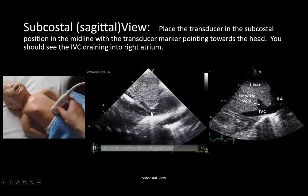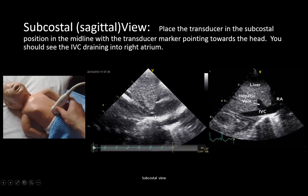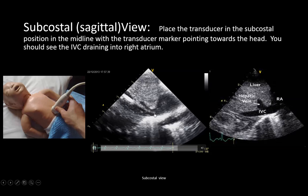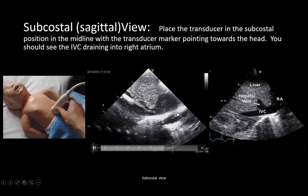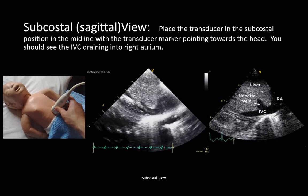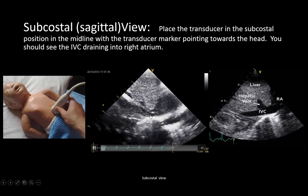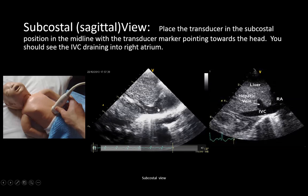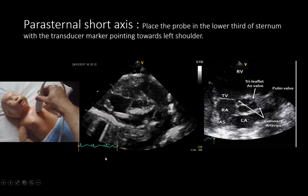Once we see the catheter tip entering the right atrium, we need to assess how far it has advanced — whether it is at the right atrial–IVC junction, approaching the inter-atrial septum, or crossing to the left atrium. If this is not clearly seen from the subcostal view alone, we proceed to the parasternal short axis view.